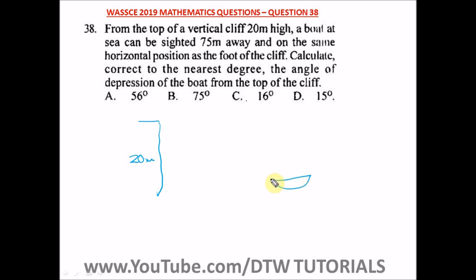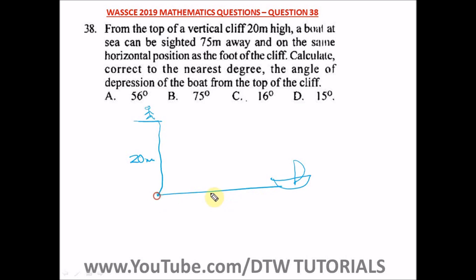Let's draw the diagram. This is our boat. The boat can be sighted 75 meters away on the same horizontal position as the foot of the cliff. So from the top of the cliff to the boat horizontally is 75 meters.